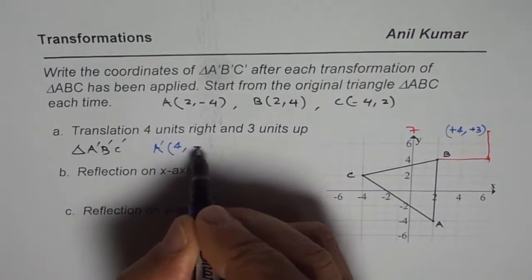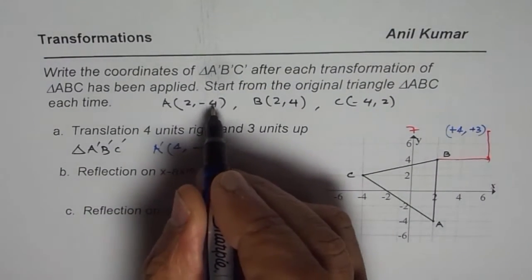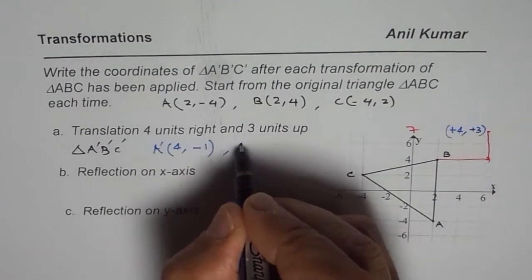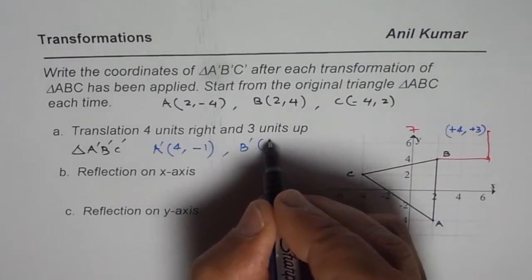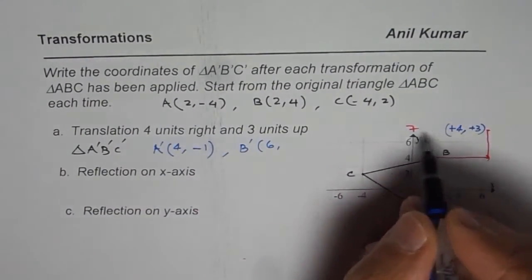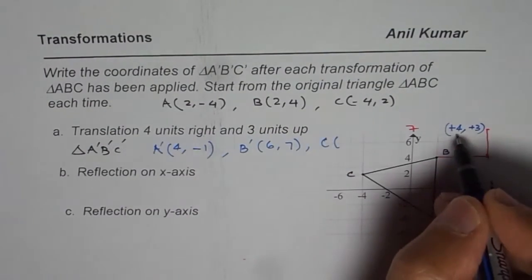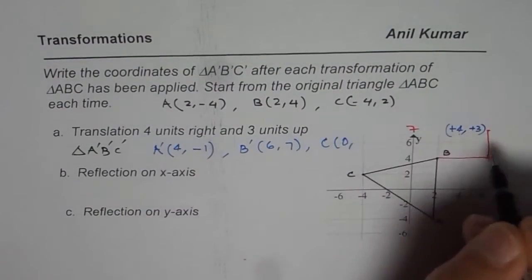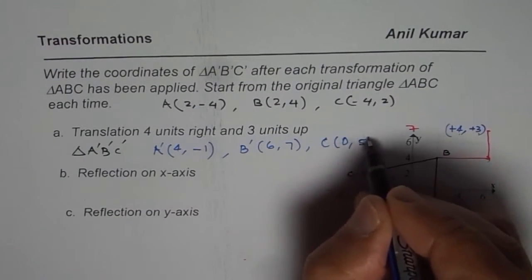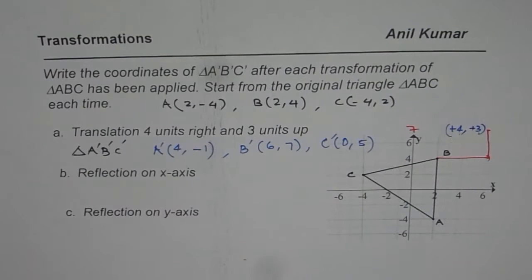B' will be: adding 4 will give us 6 and 4 plus 3 will give us 7. For C it will be: adding 4 will give us 0, and 3 plus 2 is 5. So these are your points.